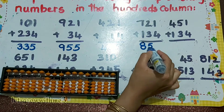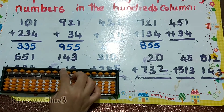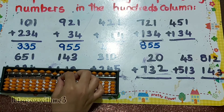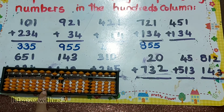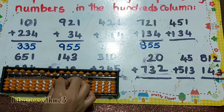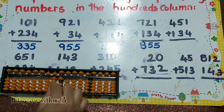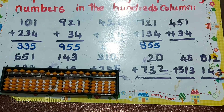Next one: 451 plus 1. How to add plus 1 — plus 5 minus 4. Plus 3 you can add directly. Plus 4 — plus 5 minus 1. So our answer is 585.